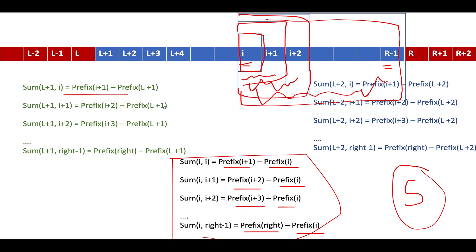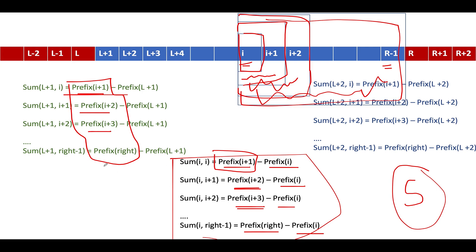Can we simplify these equations? Yes. If we carefully observe, all the positive terms remain the same across equations in each group: prefix[i+1], prefix[i+2], prefix[i+3], up to prefix[right]. Similarly for the other groups. The positive part remains the same, so if we can identify the number of elements in each group and multiply them together, the positive part is sorted. Similarly, let's handle the negative part.